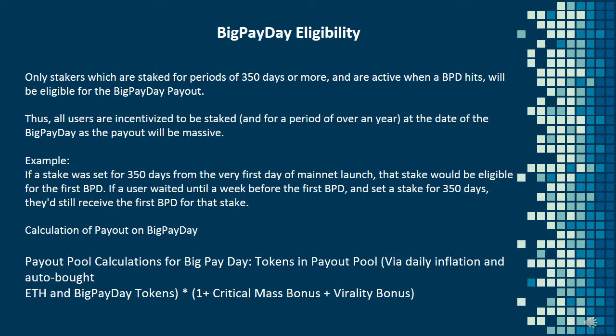Big Payday eligibility: Only stakers which are staked for periods of 350 days or more, and are active when a Big Payday hits, will be eligible for the Big Payday payout. All users are therefore incentivized to be staked for a period of over a year. For example, if a stake was set for 350 days from the very first day of mainnet launch, that stake would be eligible for the first BPD. If a user waited until a week before the first BPD and set a stake for 350 days, they'd still receive the first BPD for that stake.